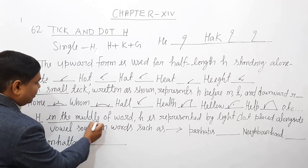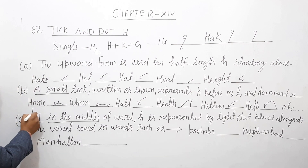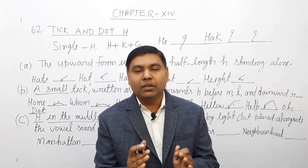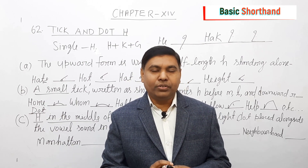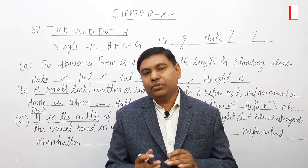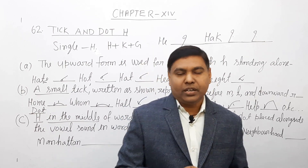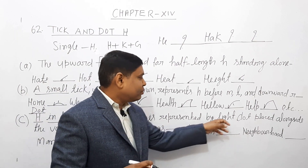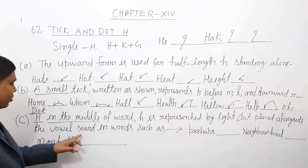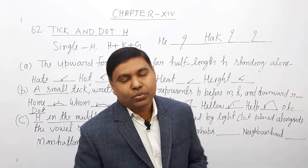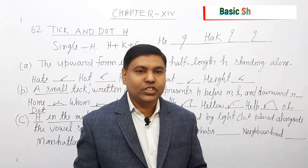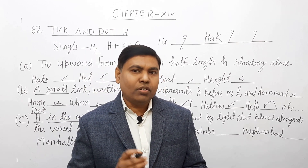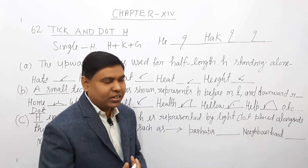Next point है — H in the middle, जिसको हम बोलते हैं dot H। Dot H तब लगाएंगे जब हमारा किसी भी word के middle में आएगा, वो भी along vowel sound — यानि जहाँ पे vowels लगेंगे, उसी के just ऊपर ही dot H light में लगाएंगे। H is represented by a light dot placed alongside the vowel sound। Means कि कोई भी word आता है, अगर H का sound middle में आता है, तो उसके sound को पहले लिखना है, उसके बाद H को represent करना है।